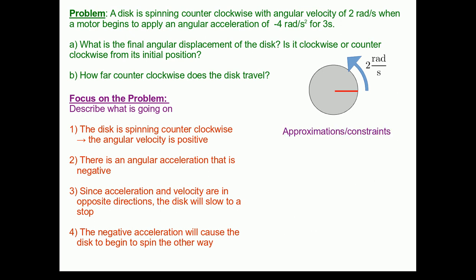Now that we've described in words what's going to go on, the next step in our problem-solving framework is to identify any approximations or constraints. Well, we know that the acceleration is constant, at negative 4 radians per second squared. This means we can use the kinematic equations that were introduced at the end of last lecture.